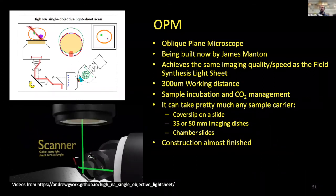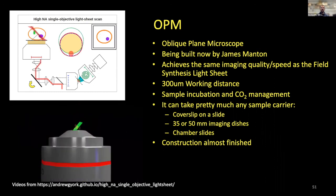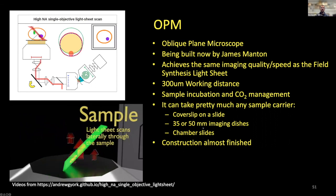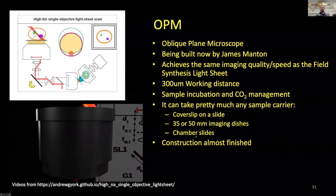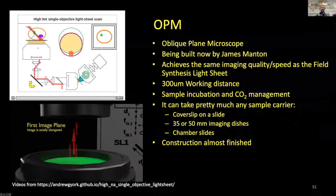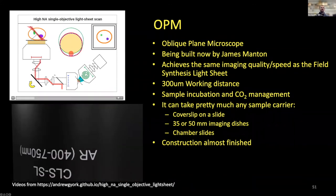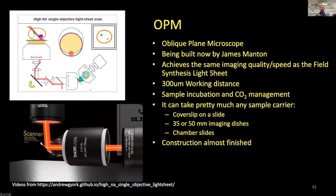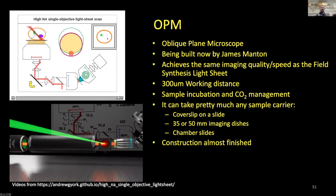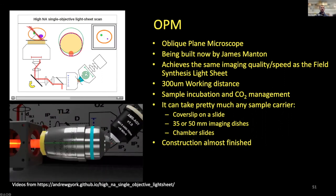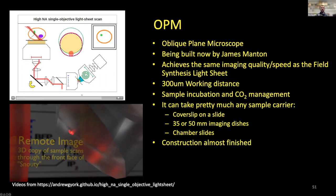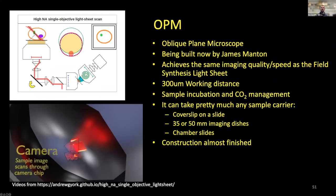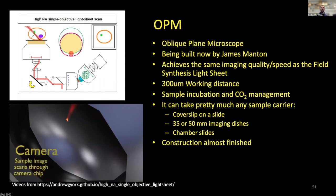The OPM is much more accessible to users because you can use whatever sample carrier you like: a coverslip on a slide, a 35 or 50 mm imaging dish, a chamber slide, or a Lab-Tek chamber slide. The single objective serves as both the sheet-forming and detection objective, allowing a high NA to be achieved for high resolution. It will have commercial sample incubation and CO2 management. More information is available via a schematic from Andrew York's group at the website shown.